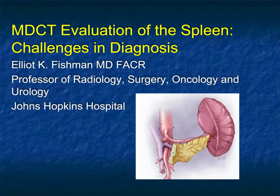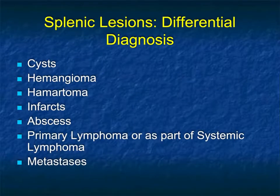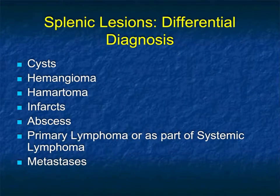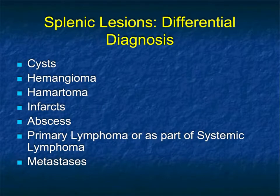Hi, this is Elliot Fishman, and welcome to our latest talk. This is going to be on the spleen, looking at some of the challenges in diagnosis. When you think about splenic lesions, there are a range of possibilities from typical benign lesions like cysts, hemangiomas, and hematomas, to inflammatory processes like infarcts and abscesses, to malignancies such as primary splenic lymphoma, angiosarcoma, or metastatic disease.